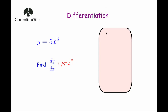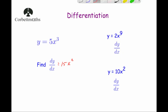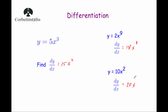Let's look at a couple more like that. If y equals 2x to the power of 9, bring the power down: 2 times 9 is 18, then x to the power of 8. For y equals 10x squared, bring the 2 down: 10 times 2 is 20, then x to the power of 1 — but we tend not to write x to the power of 1, so we leave the answer as 20x.